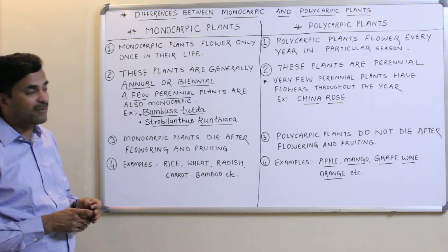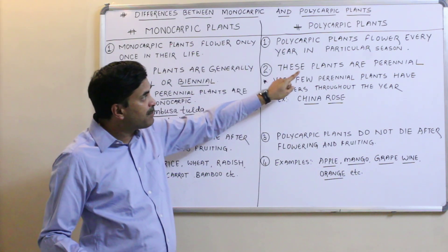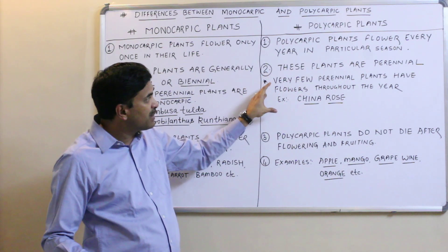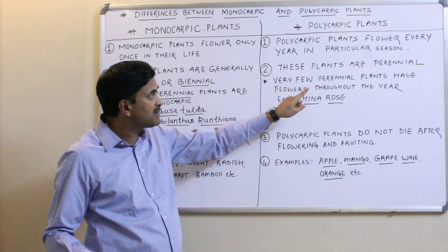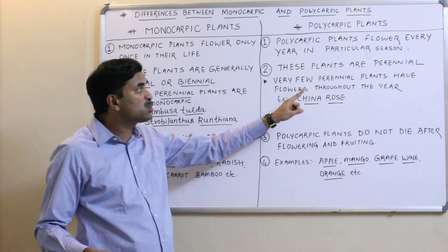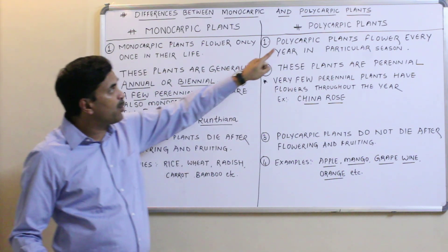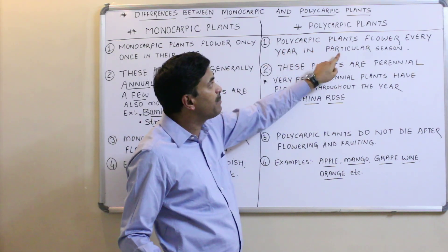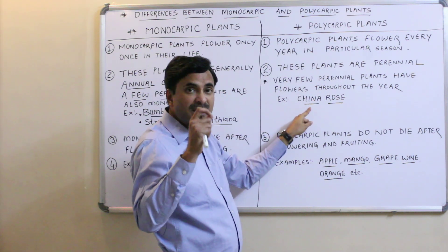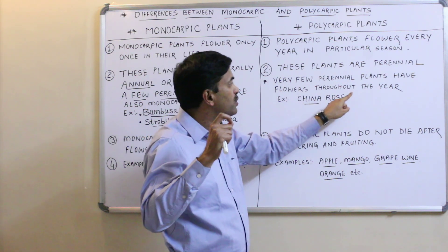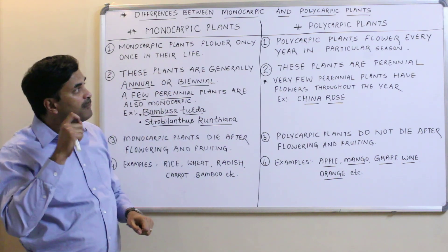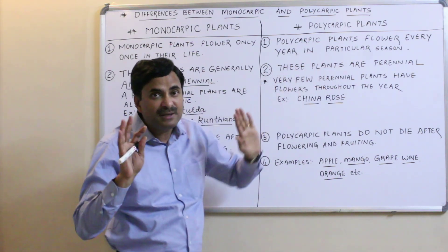Polycarpic plants are perennial. However, there is an exception: a few perennial plants flower throughout the year. For example, the China rose is a perennial plant that flowers throughout the year, not just in a particular season. But generally, polycarpic plants flower every year in a particular season.